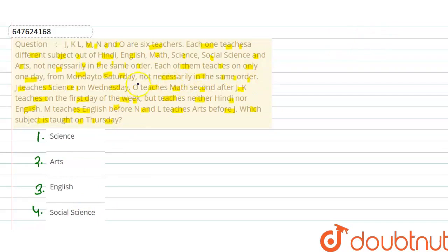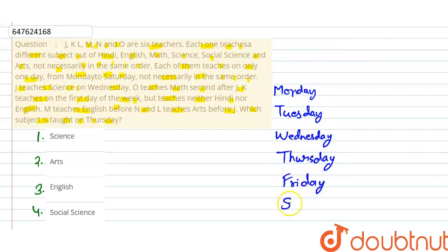Now, first of all, hamari Monday to Saturday, 6 days ka diya gaya hai, so Monday, Tuesday, Wednesday, Thursday, Friday and Saturday.